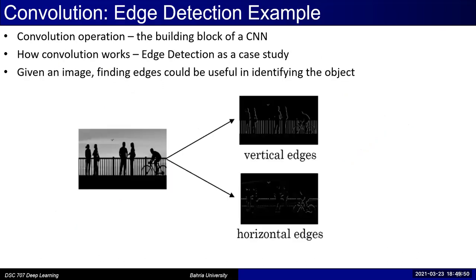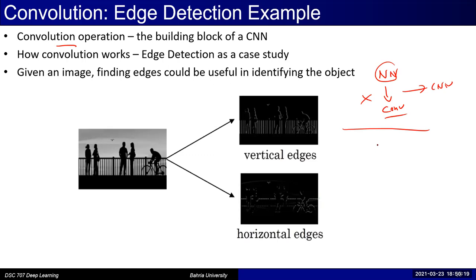To understand convolutional neural networks, the key operation is convolution. We'll spend time discussing what convolution is. One approach is to start with a neural network and fit convolution into it; but that's not very intuitive. Instead, we'll start with convolution, understand how it works, and then fit it into a neural network to get what we call a CNN. To understand how convolution works, we take the case study of detecting edges in an image.